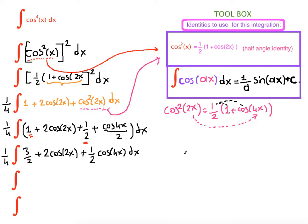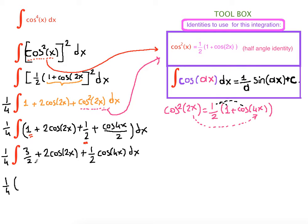Now we're going to do our integration because we know the antiderivative of each term one by one. So one fourth — the antiderivative of three over two is three over two x. What is the antiderivative of cosine of 2x?